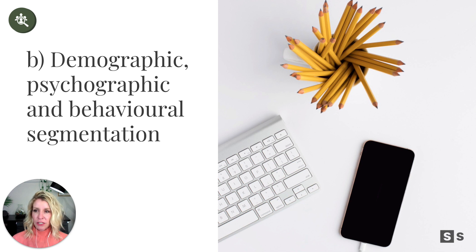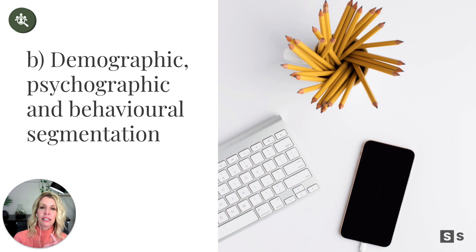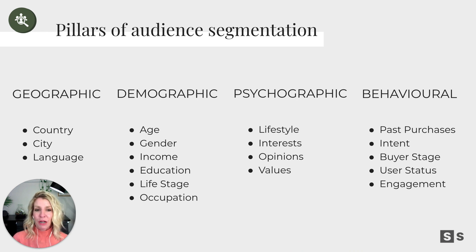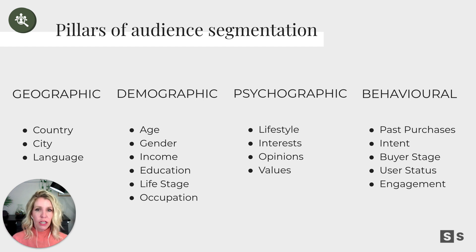So from here, in our segmenting, targeting, and personalized content, we can think about it in terms of demographic, psychographic, or behavioral segmentation — these are the basic categories. When you think geographic: country, city, even language, what region — basic top-line data. Demographics: age, gender, maybe income, education, life stage, occupation.